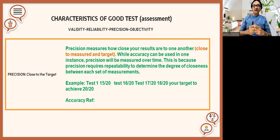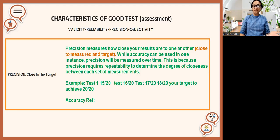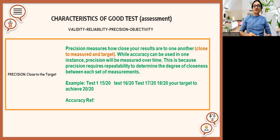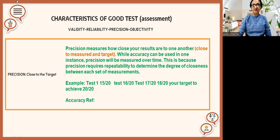Precision will be measured over time through our formative assessments, which we conduct repeatedly. That's what we call progress — to improve students' performance over skills or learning outcomes. Precision requires repeating assessments to determine the degree of closeness, and you repeat because you want to achieve the maximum. So today's lesson was to make the difference between validity, reliability, objectivity, and precision. I hope this will help you a lot. We'll be meeting in the next lesson. Till then, stay blessed and stay safe.